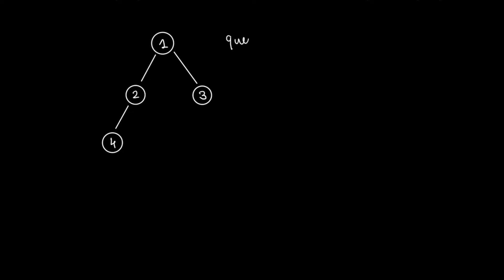To perform breadth first search on our tree, we will use the queue data structure. A queue is an array where elements are added to the end and taken out from the front. I've declared a variable 'queue' as an empty list. To add an element I'll use queue.append(), and to take out the front element I'll use queue.pop(0).